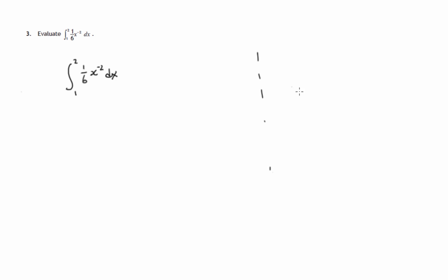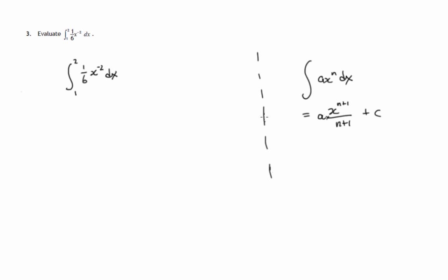The rule we use for integrating expressions like this is increase the index and divide by the new index. If there's any coefficient sitting at the front, it still sits at the front. We don't need a constant of integration when there are limits.